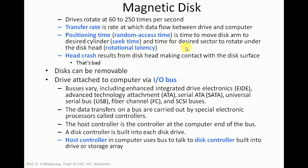The time for the desired sector to rotate under the disk head is called rotational latency. There is also something called a head crash. A head crash occurs when the read/write head makes contact with the disk surface. Due to a head crash, the disk may be permanently damaged. One thing to remember — a disk cannot be repaired; it can only be replaced. The disk can be removed if damaged due to a head crash, but it cannot be repaired.